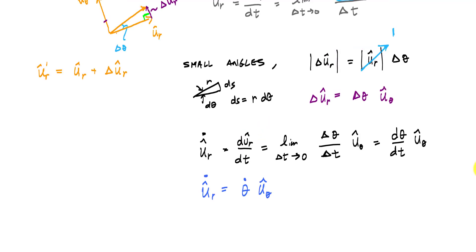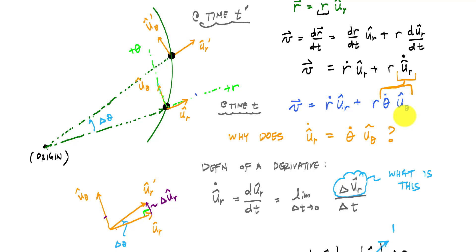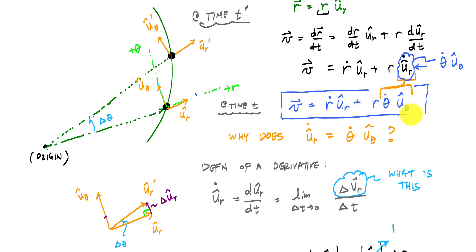Reintroducing this to the definition of the derivative, du_r_hat/dt equals the limit as delta t goes to zero of delta theta over delta t times u_theta_hat, which is the same as theta_dot u_theta_hat. Plugging this back into our velocity equation, that u_r_dot term becomes theta_dot u_theta_hat, and thus we get the velocity equation in polar components. If you can understand this geometry, the acceleration derivation follows a very similar process.